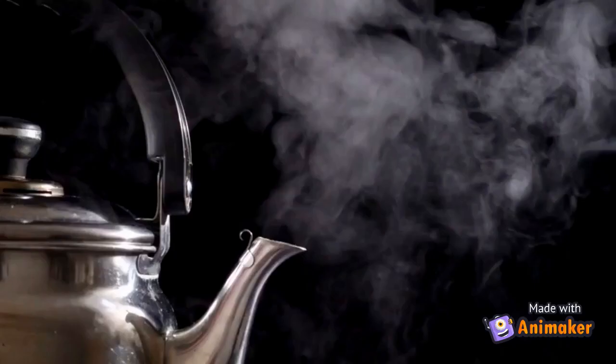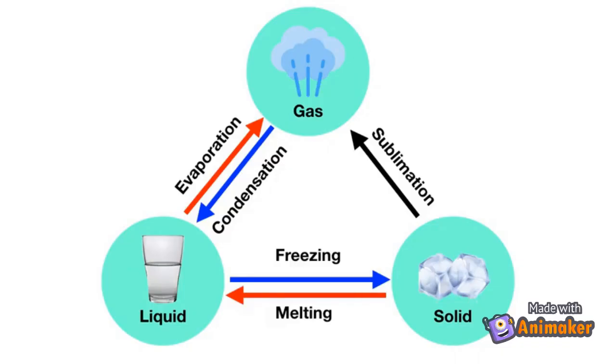Here's another. When you boil a pot of water, say to make tea, you can see all of this gas coming out of the kettle. What is this an example of? In this example, liquid water is turning into water gas, or water vapor, as you boil it. This is an example of evaporation.